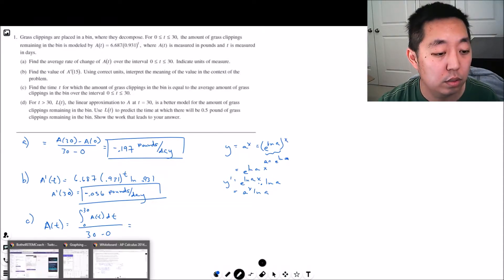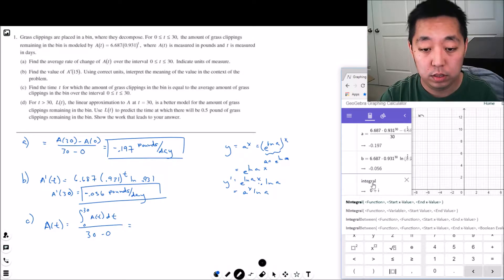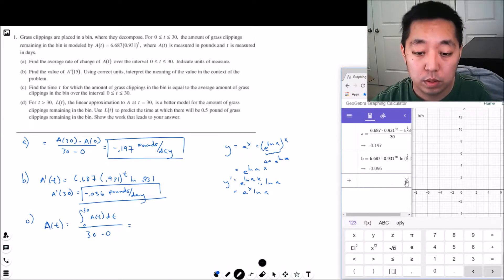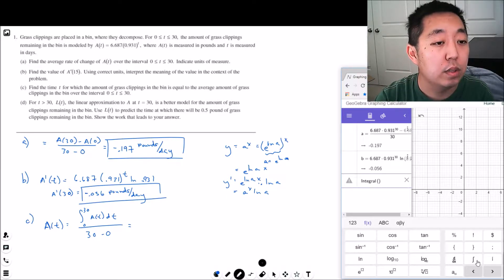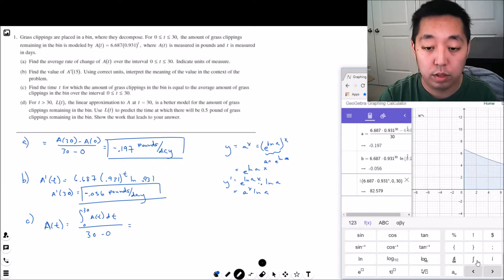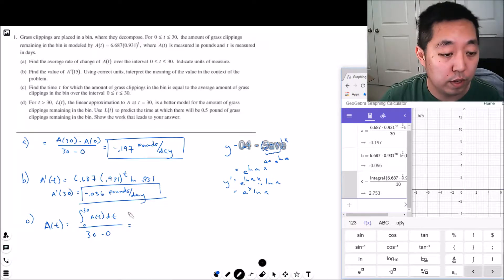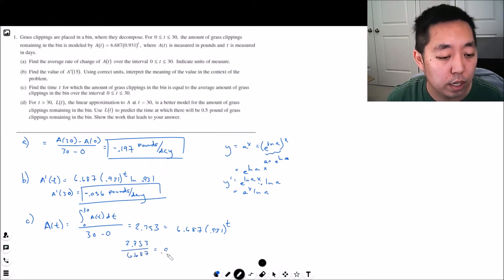I don't have an answer for it, so why don't we use the calculator to do this one. The integral of the function, which is 6.687 times 0.931 to the x, ranging from 0 to 30, divided by 30: 2.753. This has to equal A(t), so that's equal to 6.687 times 0.931 to the t. I'm going to divide: 2.753 over 6.687 is equal to 0.931 to the t.